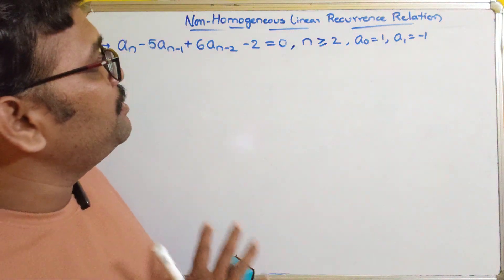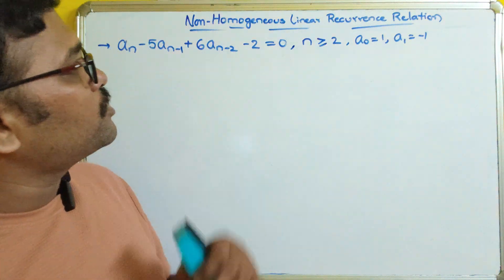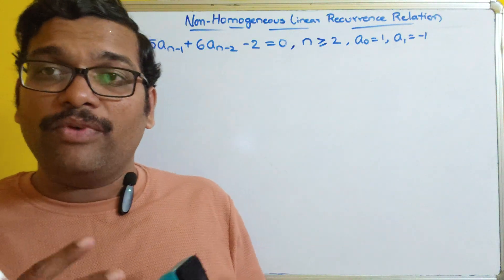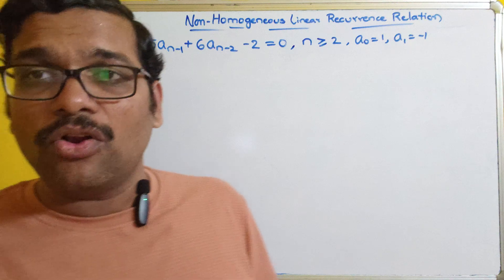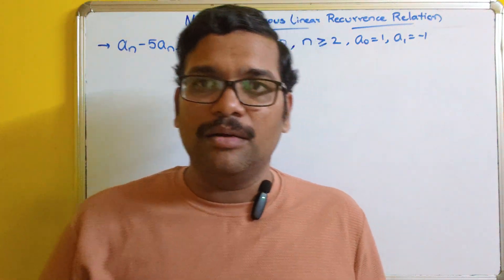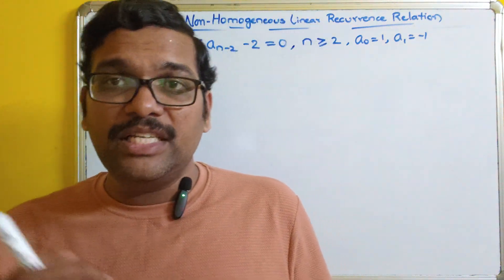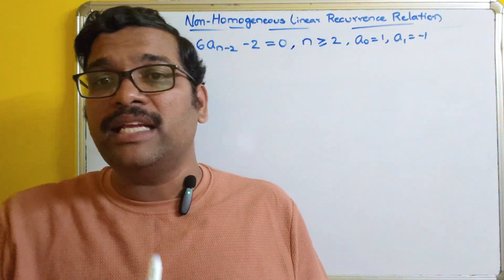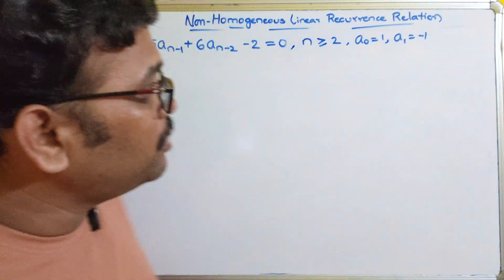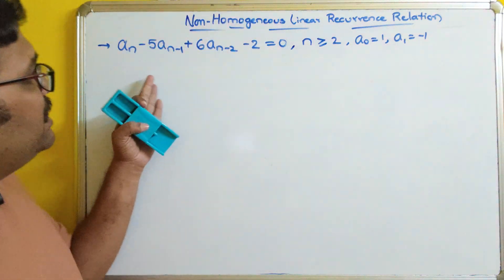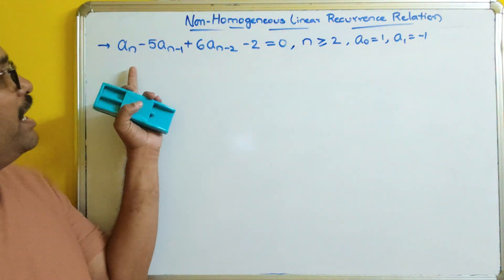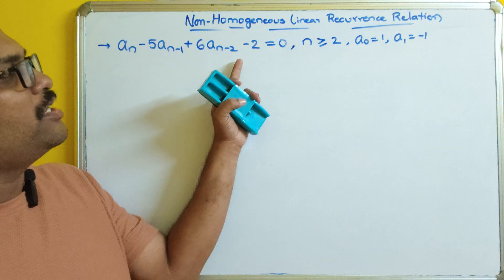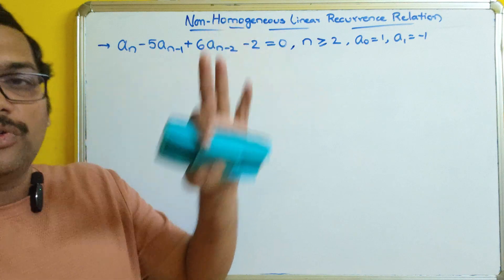In a similar way, we'll solve a problem of non-homogeneous. The reason we call it non-homogeneous is that the current term will always depend upon the previous terms and some sort of function. So let us take this example: a_n minus 5·a_(n-1) plus 6·a_(n-2) minus 2 is equal to 0.